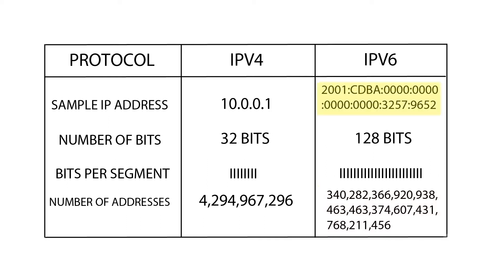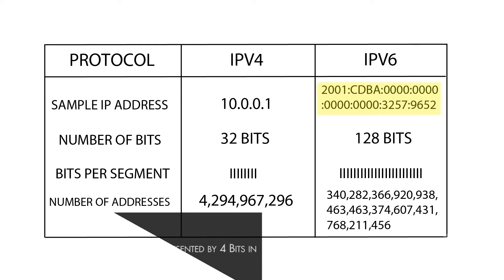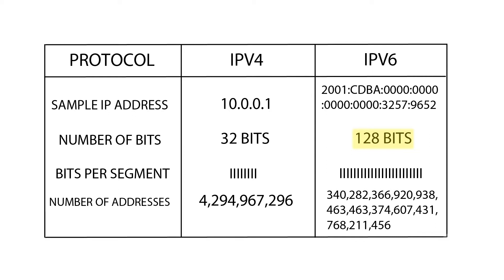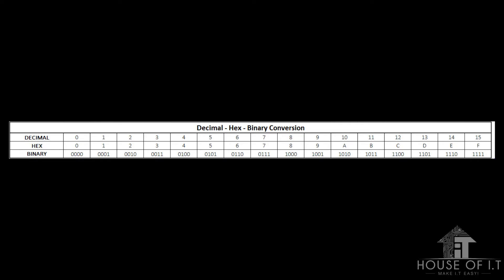Take this address as an example. It may only have 32 positions like IPv4, but each of these positions represents 4 bits, giving us a total of 128 bits. You may also notice that the address now has letters in addition to numbers. To explain these, I'm going to show you this chart.